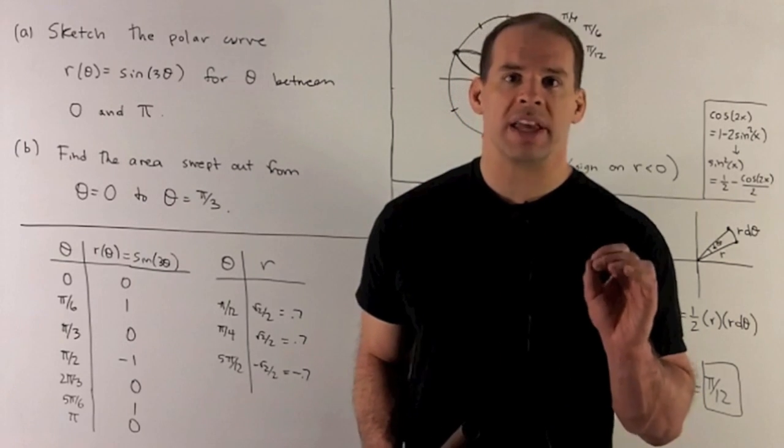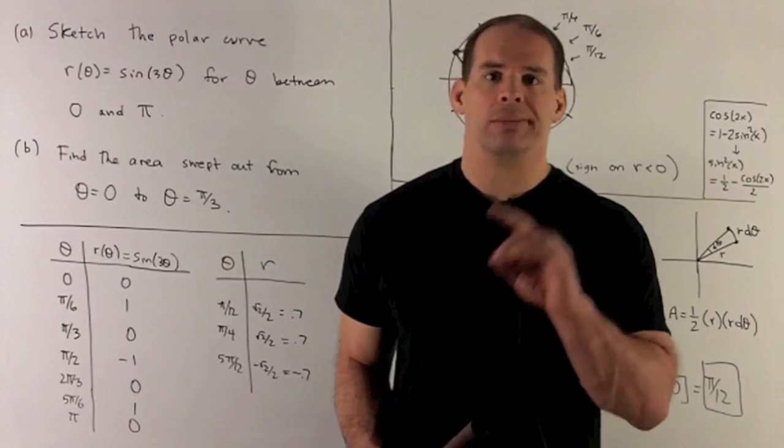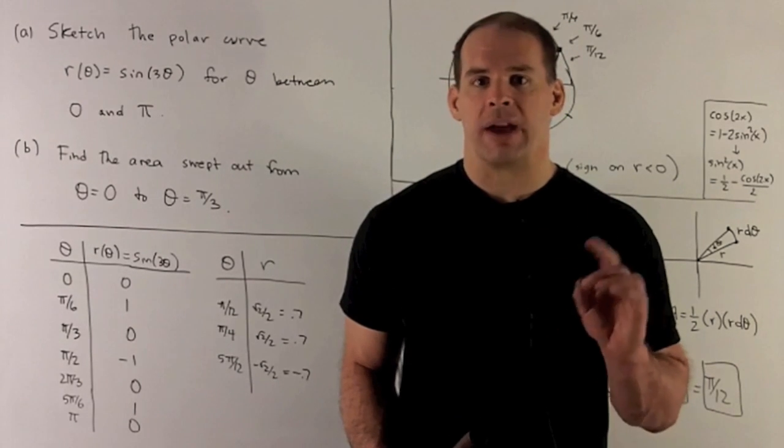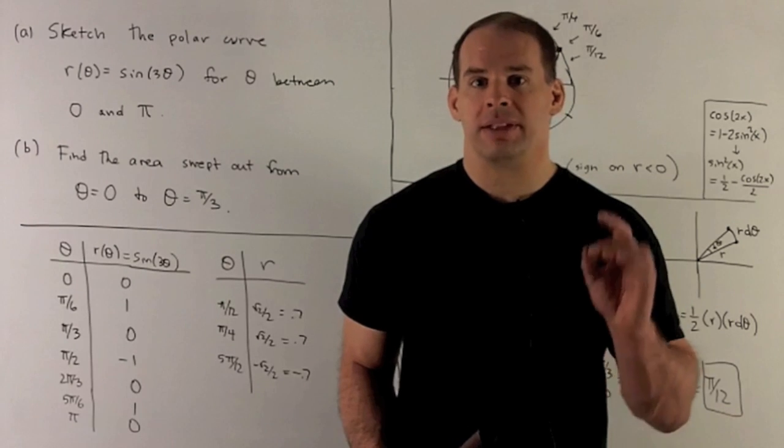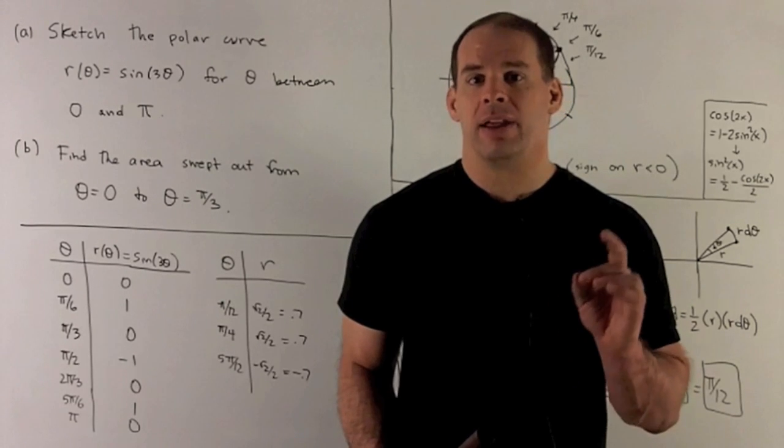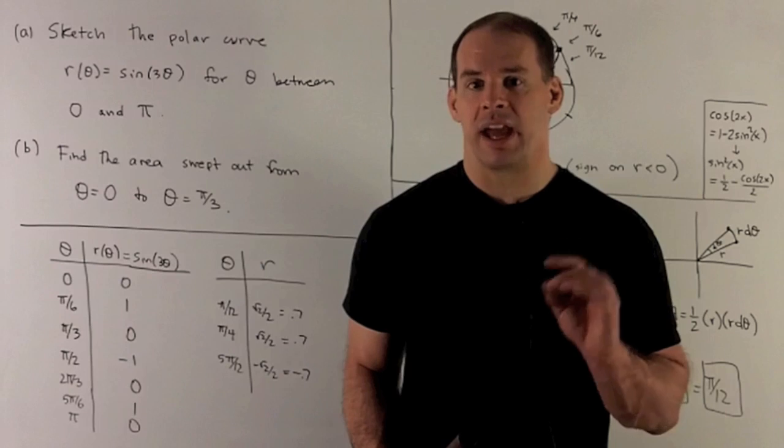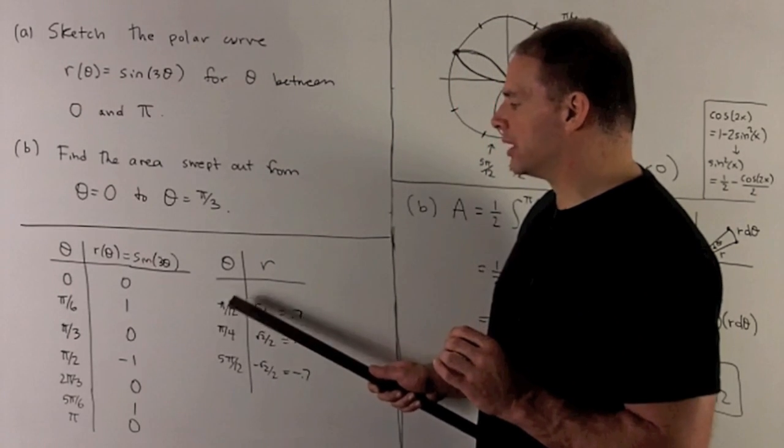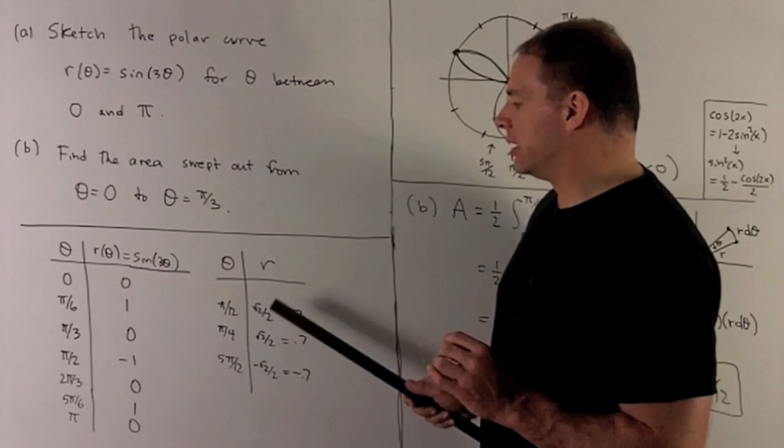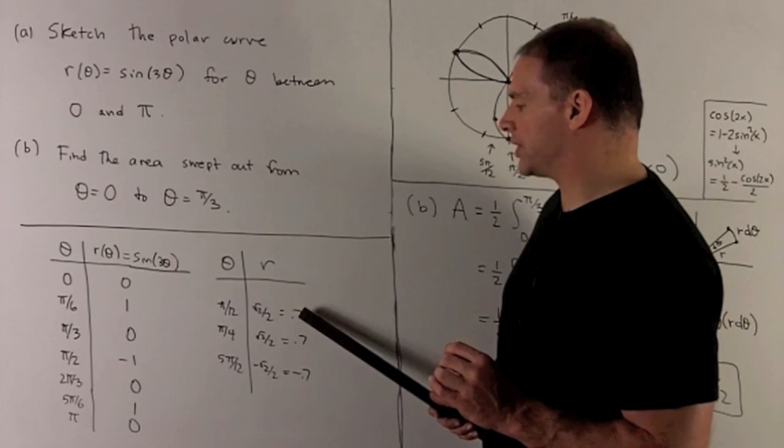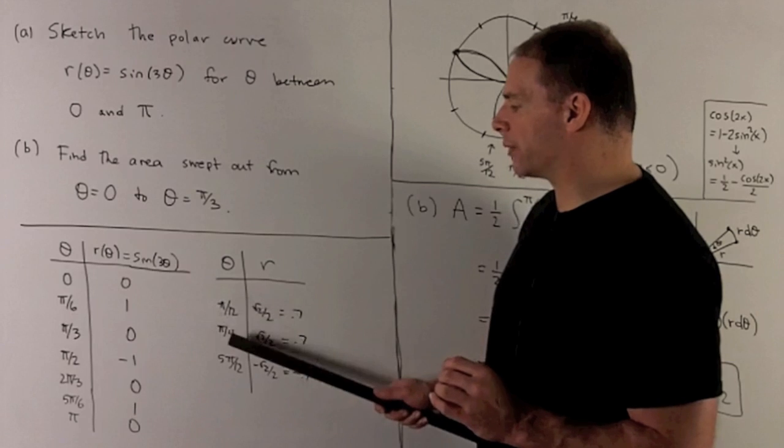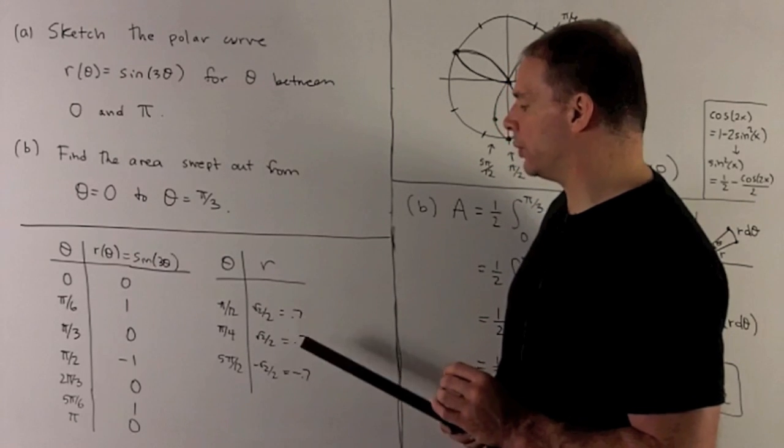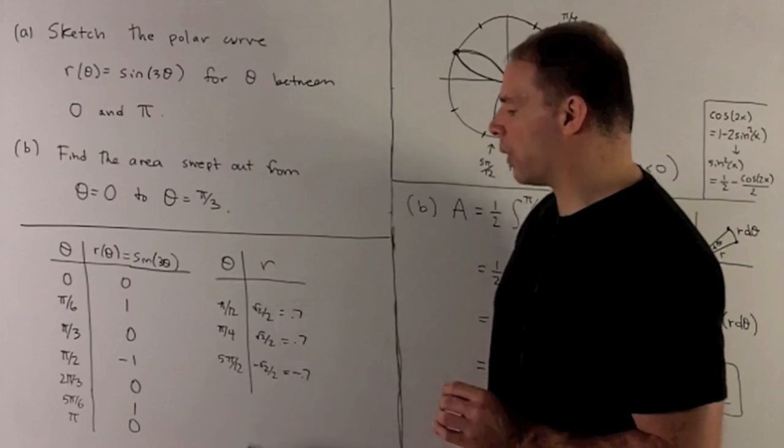Now, if we want more detail, we're going to have to pick some angles that fit in between these angles. So let's try multiples of π/4. We'll take them, divide by three, and they'll give us some more points to connect the dots with. For instance, take π/4, divide by three gives me √2/2. Take 3π/4, divide by three, gives me π/4, and again √2/2, and so on.